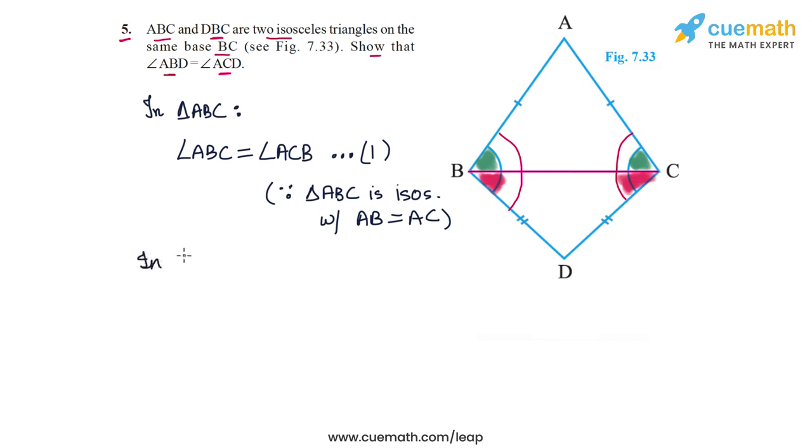Similarly in triangle DBC, we have angle DBC is equal to angle DCB, and I'm going to call this equation 2. Again this follows because DBC is isosceles so DB is equal to DC. Now all we need to do is add equations 1 and 2.